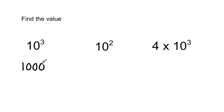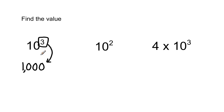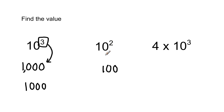Here's an easier way to write out the value of exponent form when the base number is 10: the exponent number will always equal the number of zeros on a one. So if you have 10 to the third power, you write the one and then you write three zeros on it — that's 1,000. Same thing with this one: if the exponent is two, you write two zeros with a one on it — that's 100.